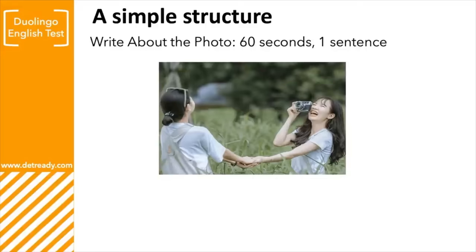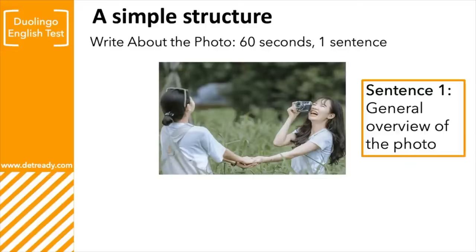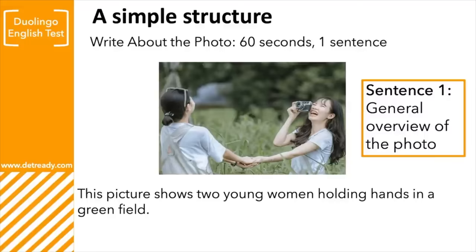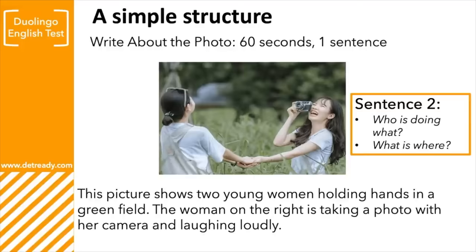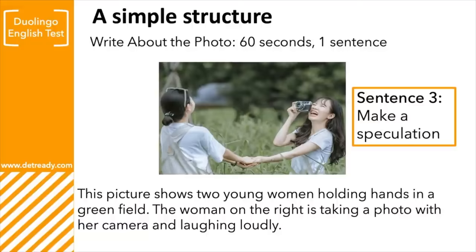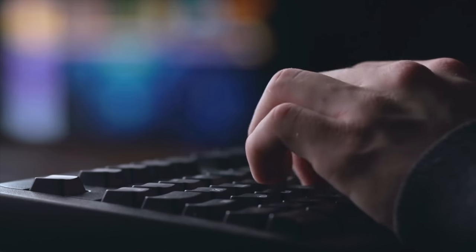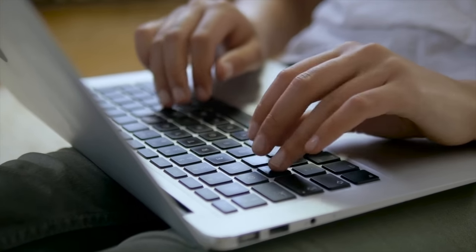I recommend you try to write more than one sentence. Here's a simple structure you can memorize. Sentence one: give a general overview of the photograph — for example, 'This picture shows two young women holding hands in a green field.' Sentence two: talk about who is doing what or what is where in more detail — for example, 'The woman on the right is taking a photo with her camera and laughing loudly.' And sentence three: if you have enough time, you can speculate — something like 'They must be best friends.' Learning a method like this helps you structure your answer so you can focus on the photograph you have to describe.